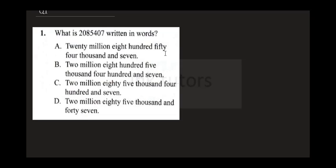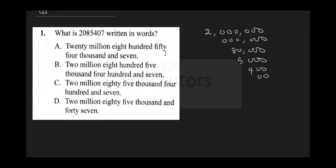Question one says: what is the figure 2,085,407 written in words? The 2 represents two million. There are zero hundreds of thousands, then eighty thousand, then five thousand, then four hundred, zero tens, and seven. So this is two million, eighty-five thousand, four hundred and seven. The correct answer is C.